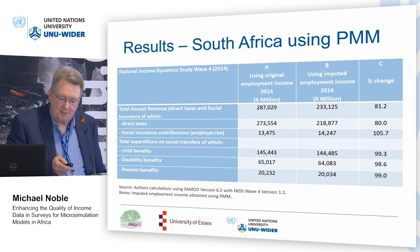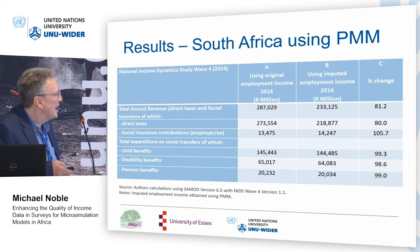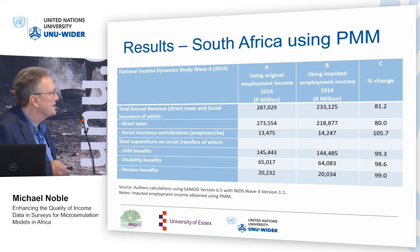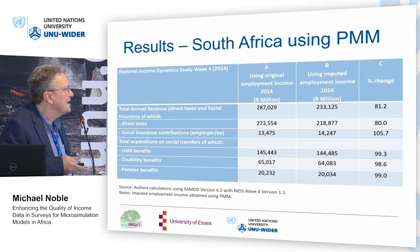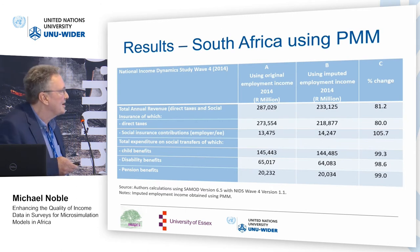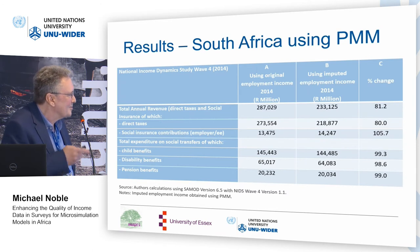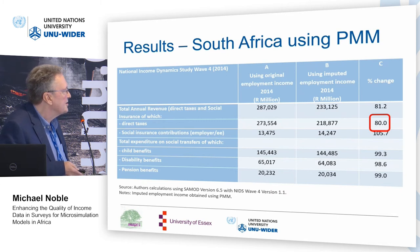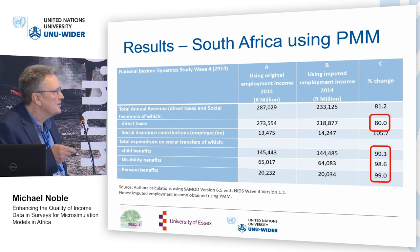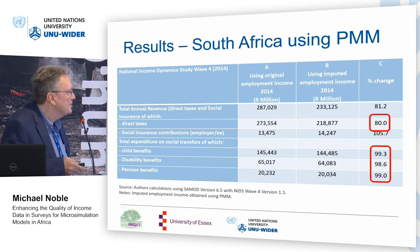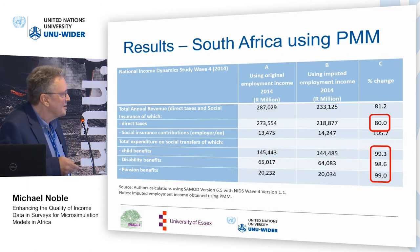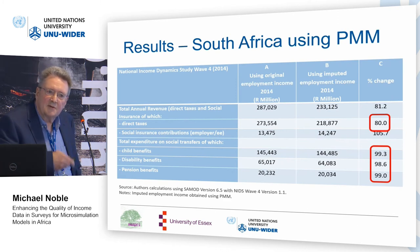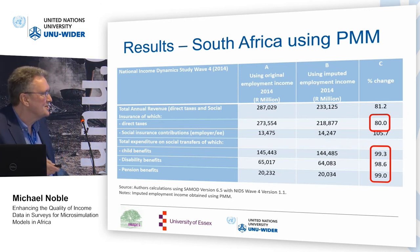Column A uses the original employment income recorded in NIDS, column B uses the totally imputed dataset on the NIDS cases, and column C is the percentage change. Quite encouragingly, 80% of direct taxes are captured by a totally imputed dataset. More importantly, because the distribution is preserved, the benefits simulated using a completely imputed dataset were very similar to those using the actual dataset — which I think is quite persuasive.